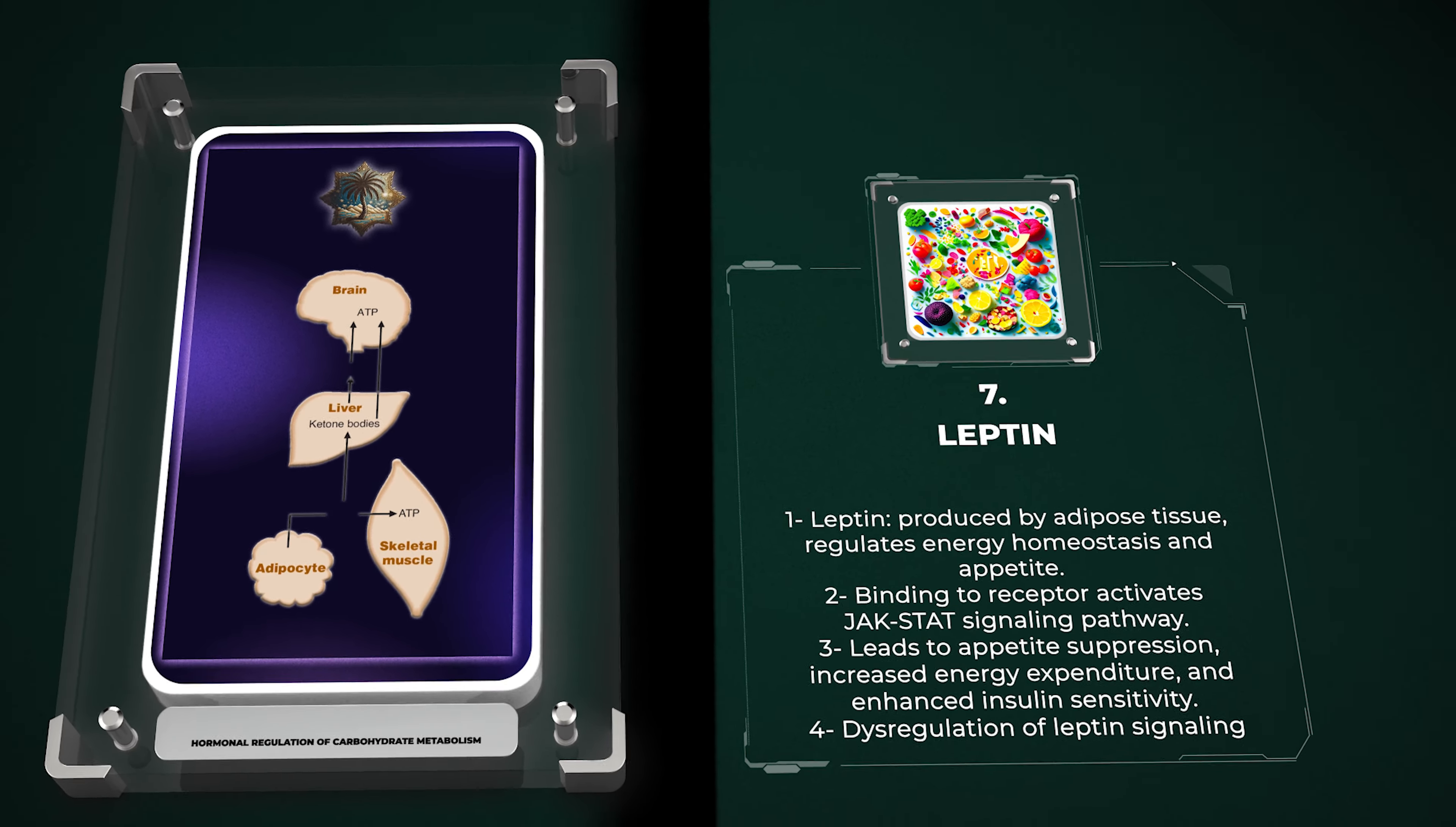Adiponectin, another adipose tissue-derived hormone, displays insulin sensitizing, anti-inflammatory, and cardioprotective effects. Through its receptors, adiponectin activates AMP-activated protein kinase (AMPK).